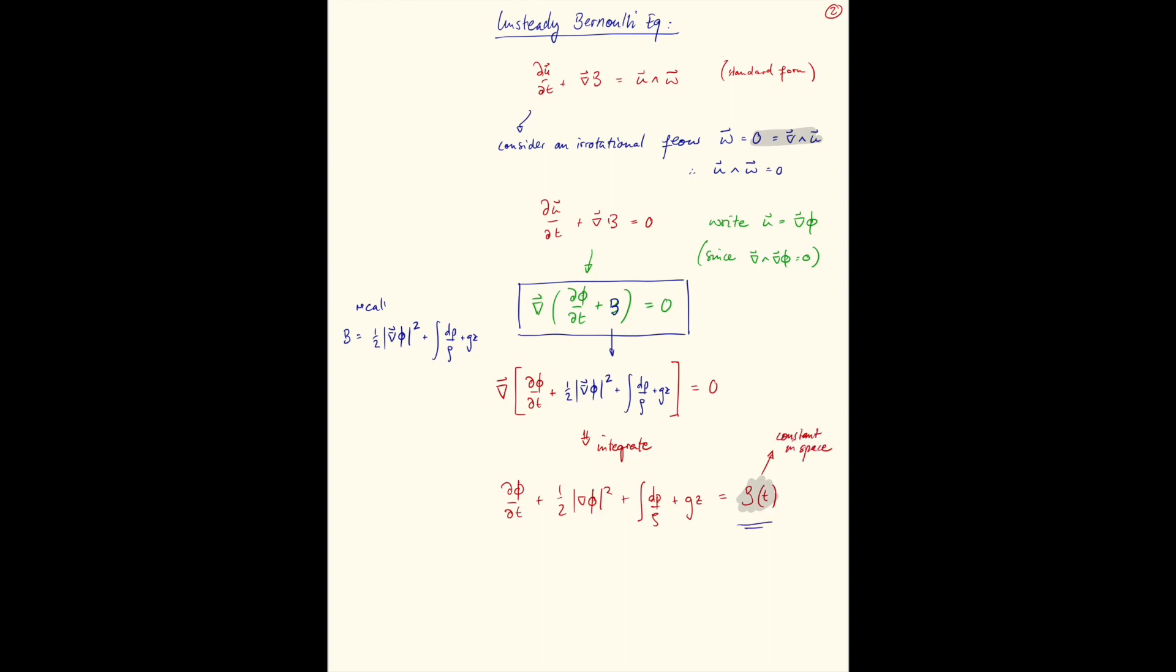We can redefine phi to include our constant in space Bernoulli function by saying just that phi dash is phi plus the integral of b over time from some reference time t0 to time t. And that doesn't actually change our velocity field because u, which is defined as the gradient of phi, spatial gradient of phi, is the same as the spatial gradient of phi dash, since this term here is only dependent on time.